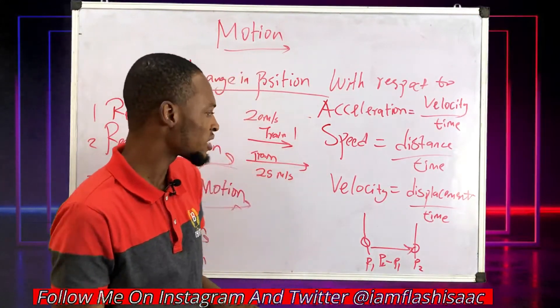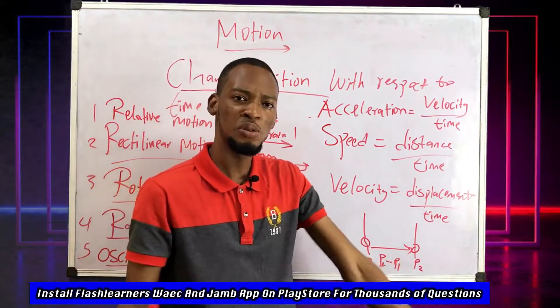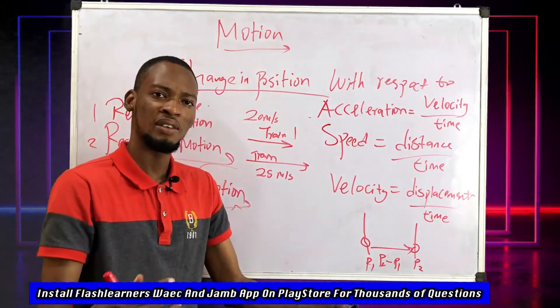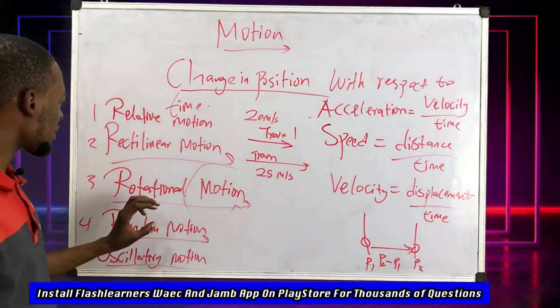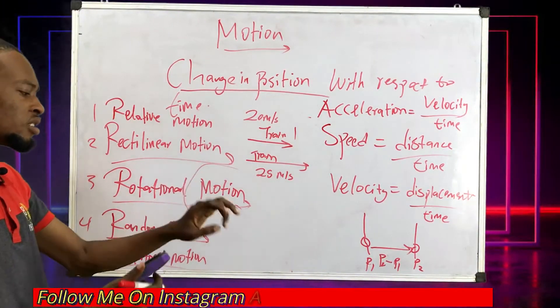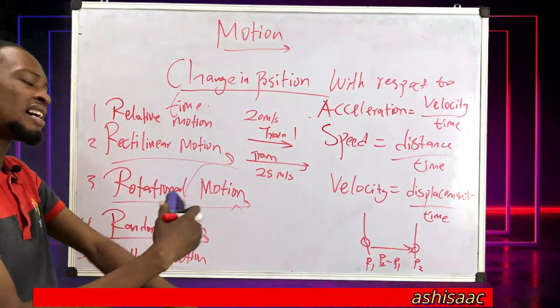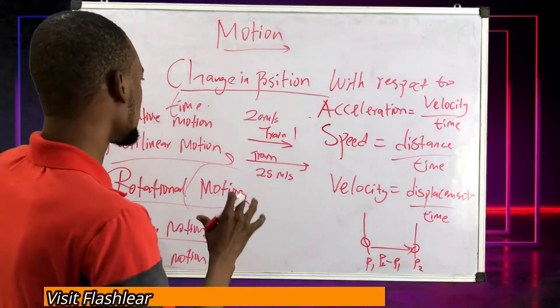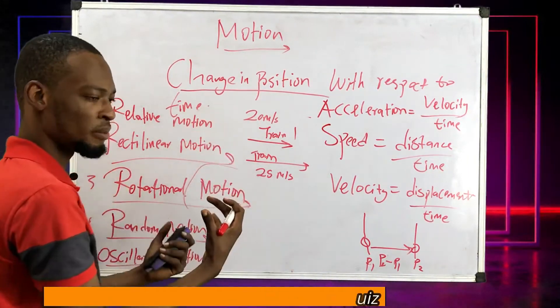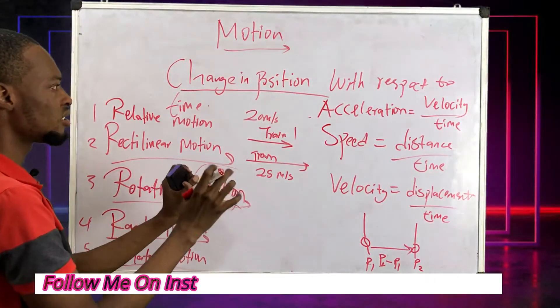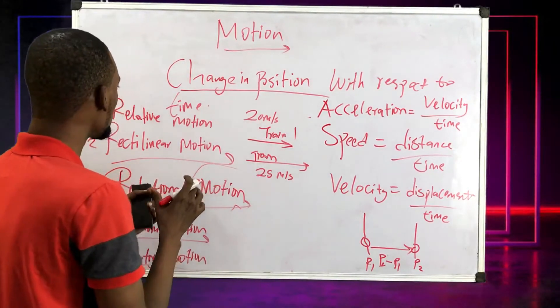That means the other train is moving relative to you. Or as you are traveling at high speed and you see the trees, they seem to be traveling also in a relative manner. Another example of rotational motion is your wristwatch - the hand of your wristwatch rotates about its axis. So these are the common types of motion: random motion, rectilinear motion, relative motion, rotational motion.